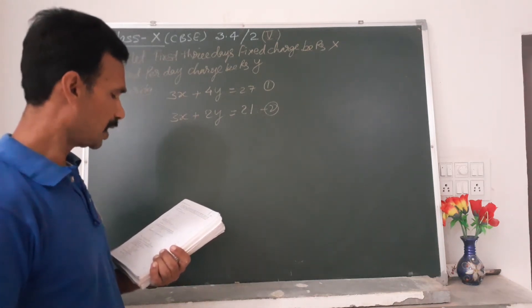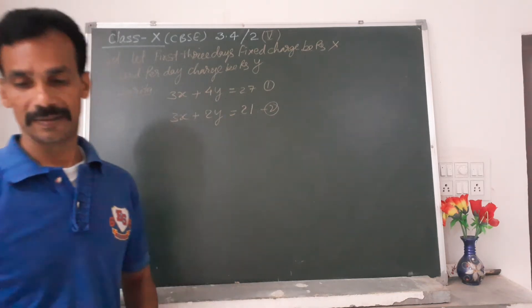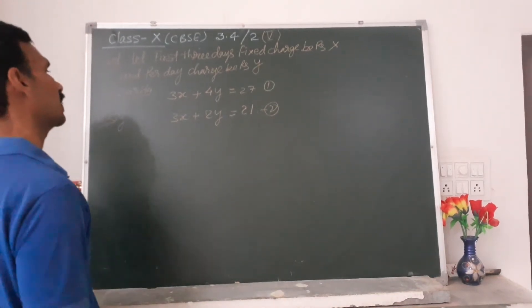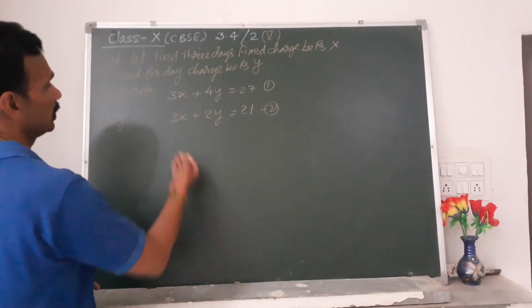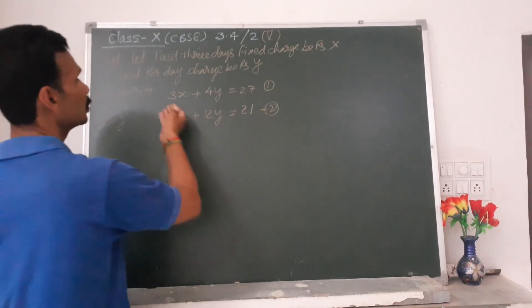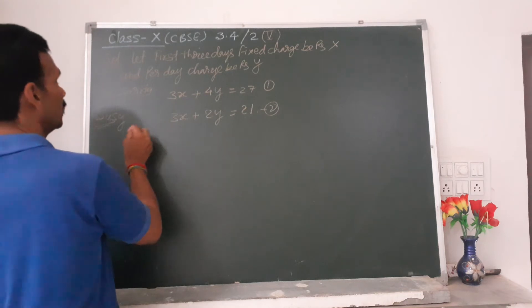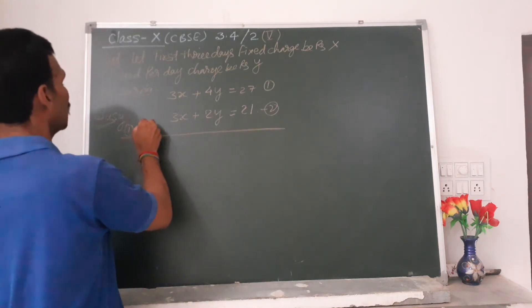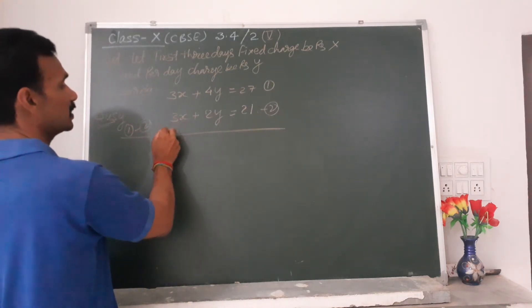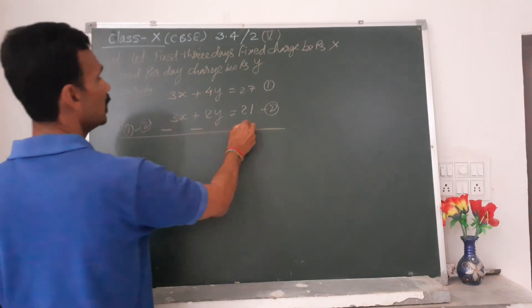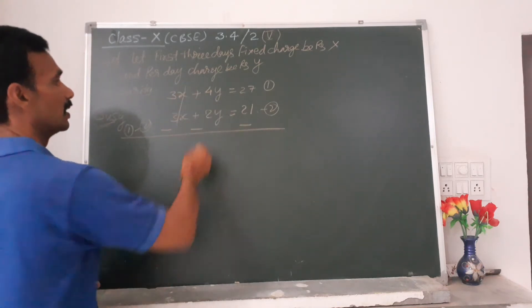Find the fixed charge and charge for each extra day. So this is equation one and two. Already both are equal, then one minus two. Sign check: minus plus minus and minus, this is cut. Then 4Y minus 2Y.